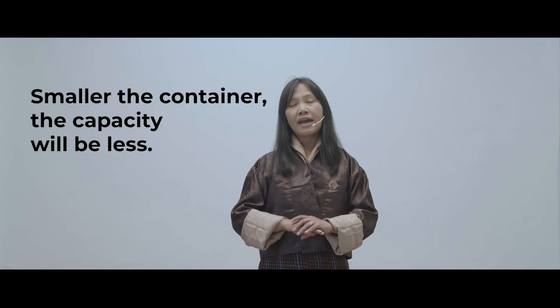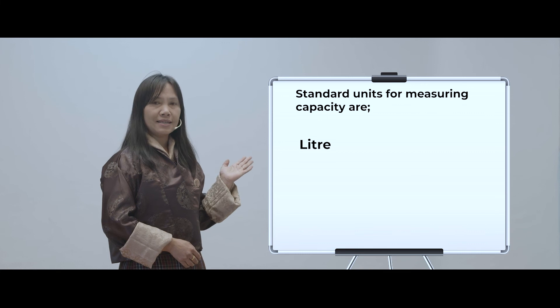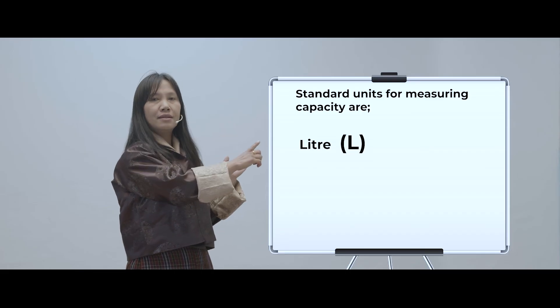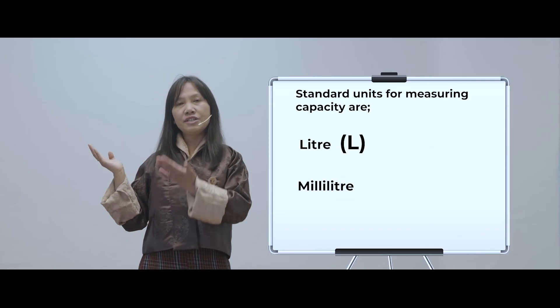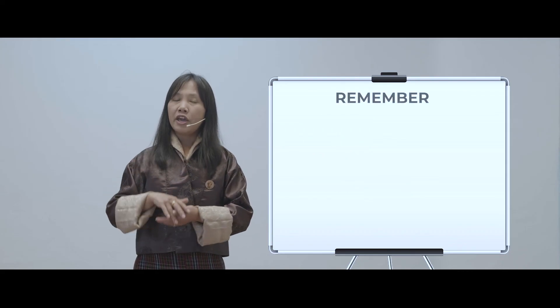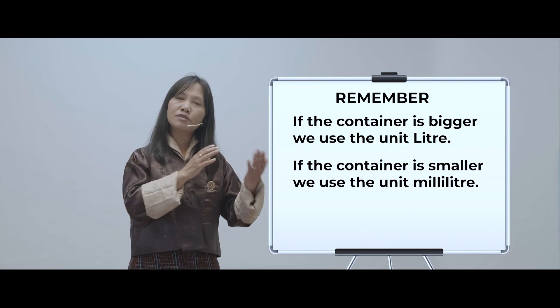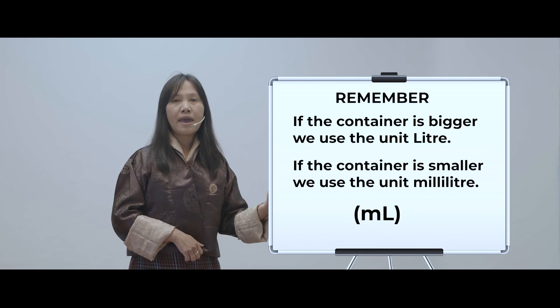Like we had standard units for length and mass, we also use standard units for measuring capacity. Standard units for measuring capacity are litre, written as L, and millilitre, written as ML. If the container is bigger, we use litres; if the container is smaller, we use millilitres.